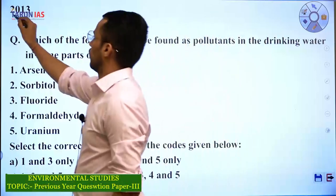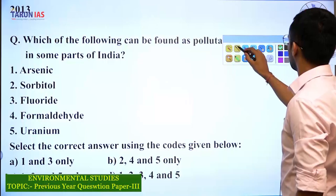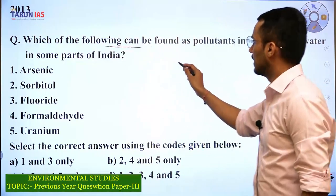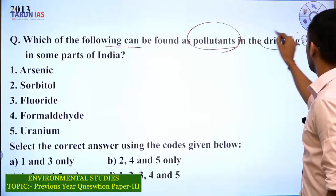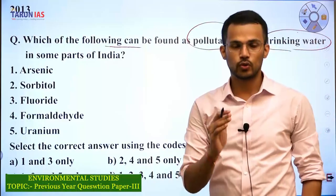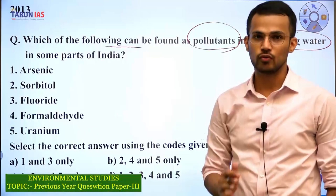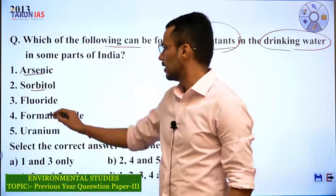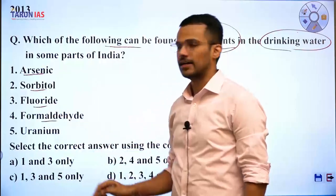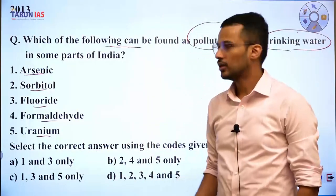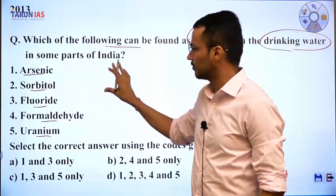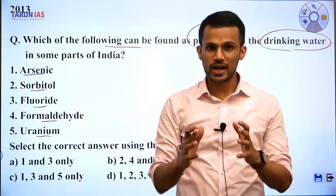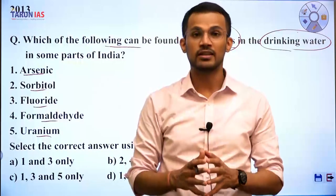The first question from 2013: which of the following can be found as pollutants in drinking water in some parts of India? The options are arsenic, sorbitol, fluoride, formaldehyde, and uranium. We need to identify which are actual pollutants present in drinking water. Formaldehyde is not a drinking water pollutant.